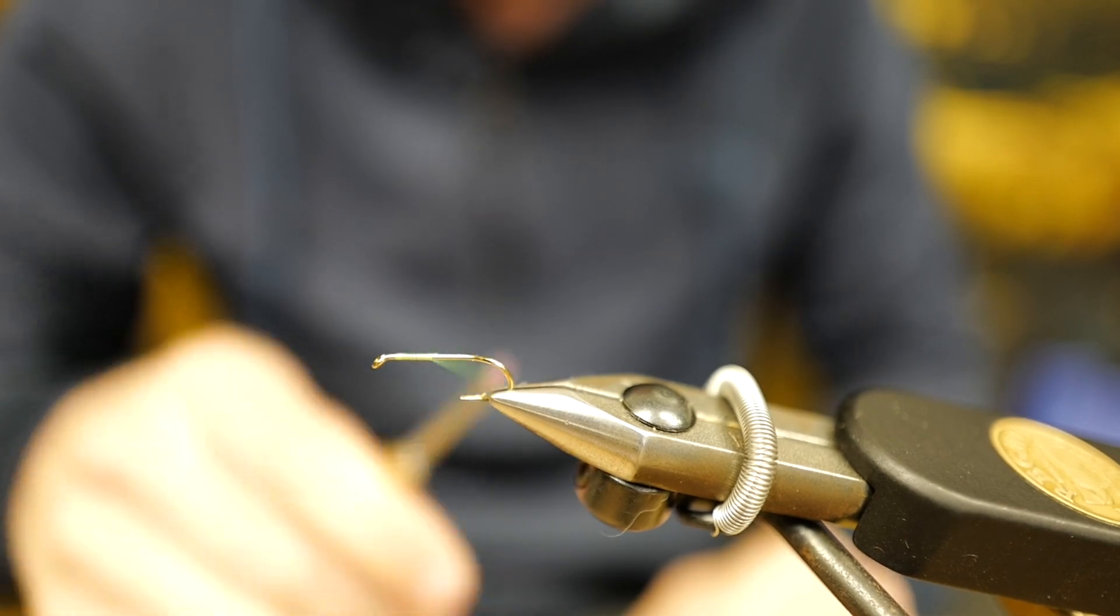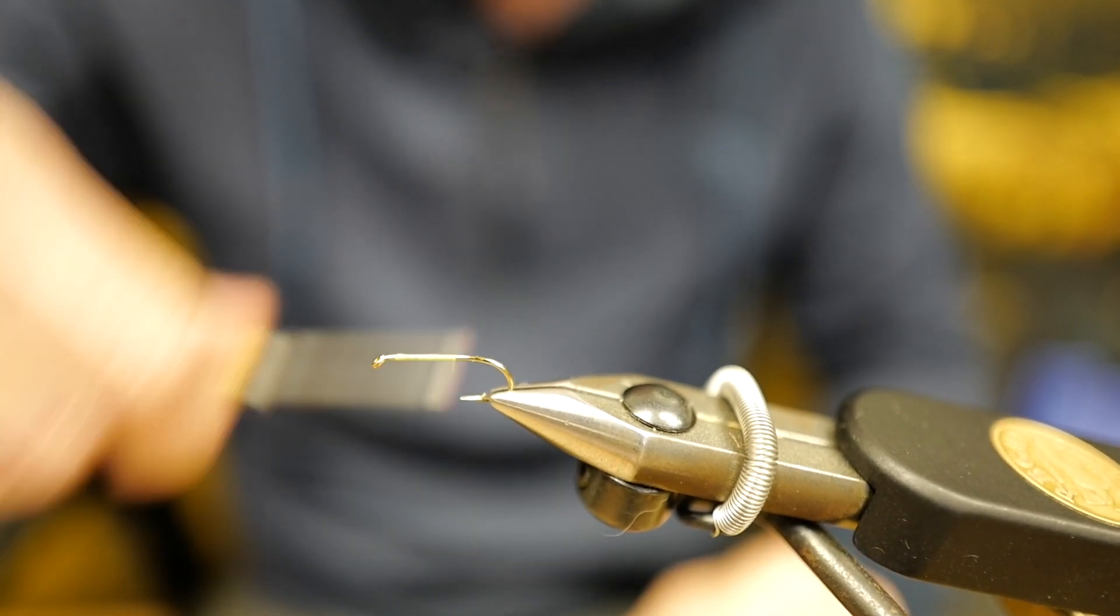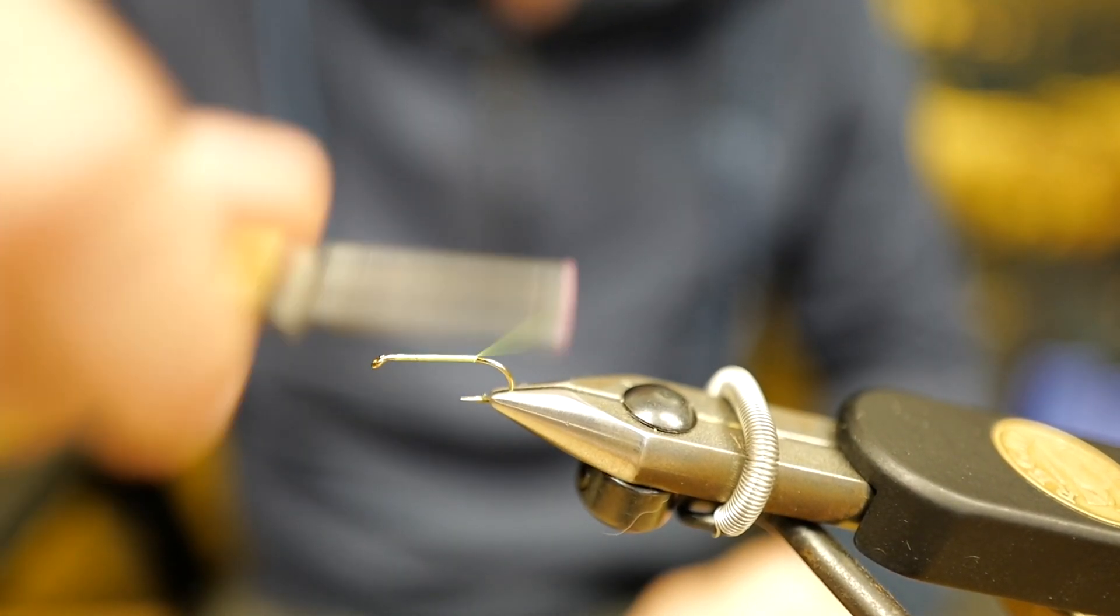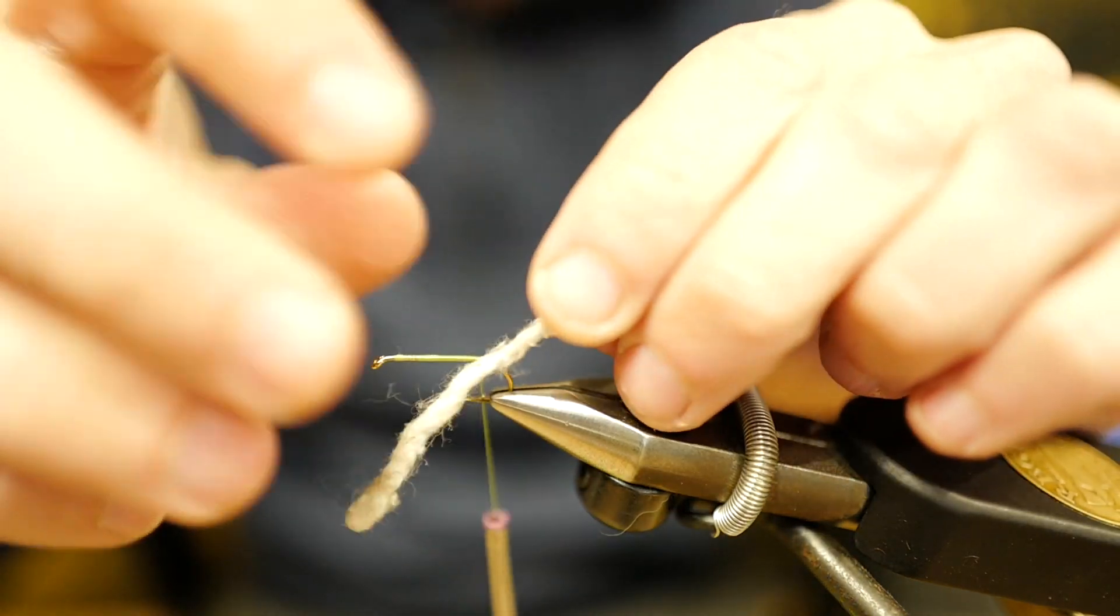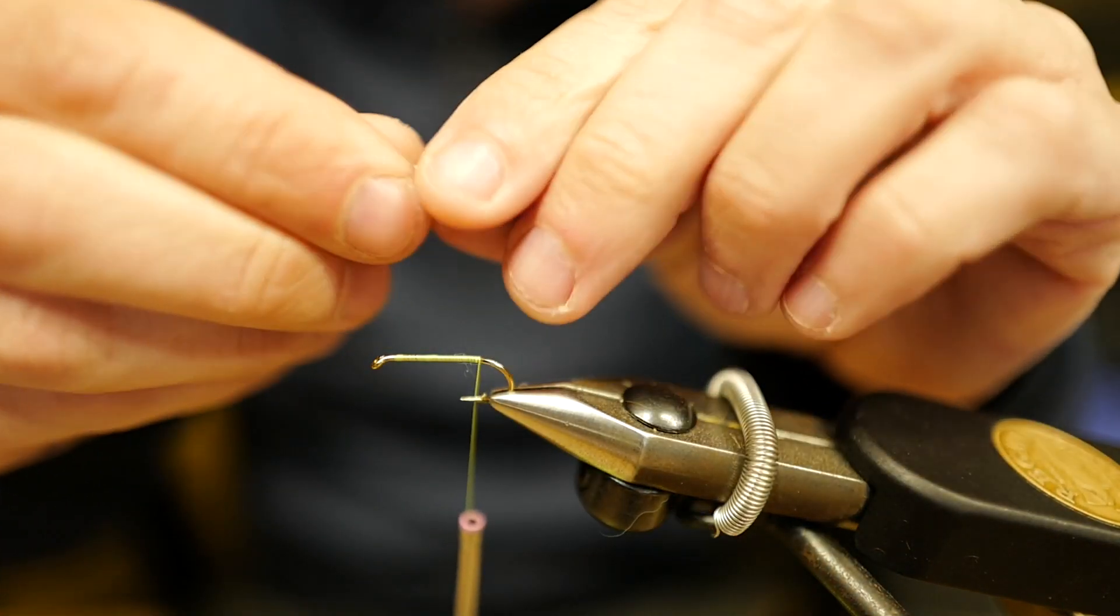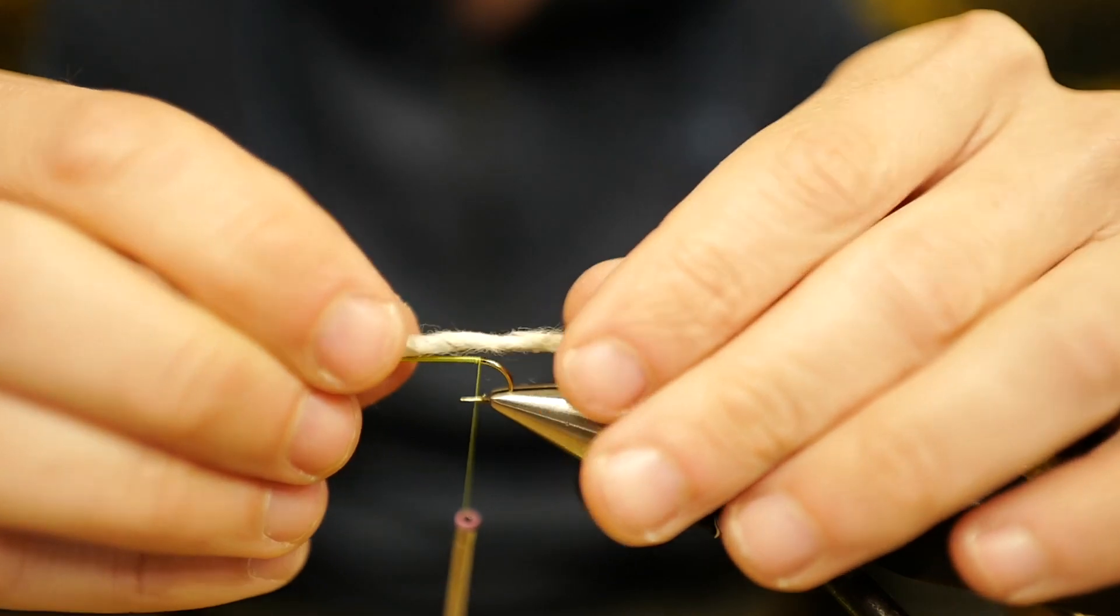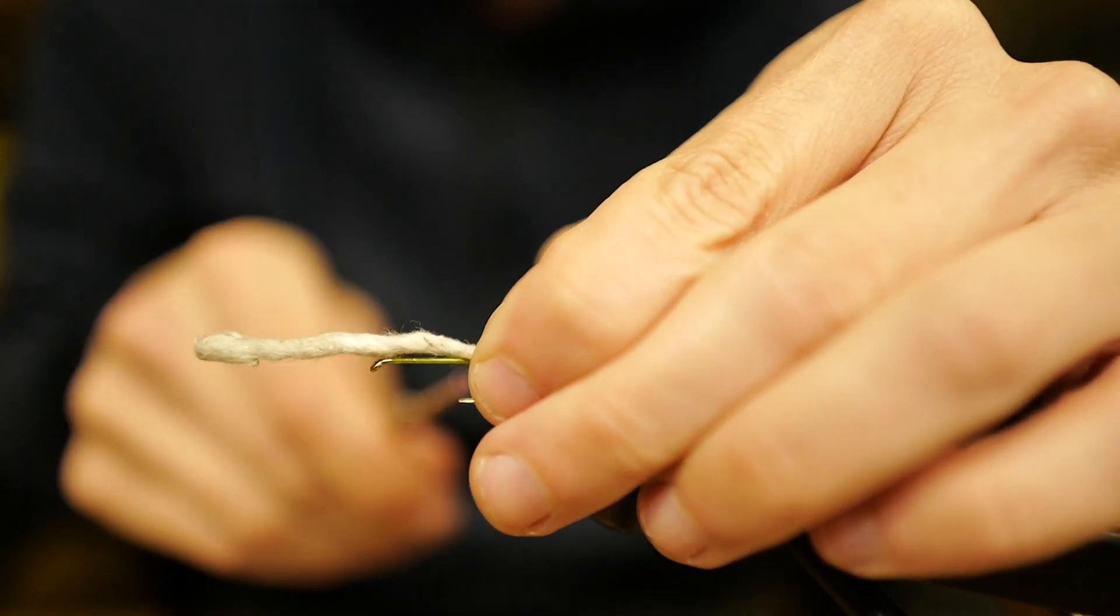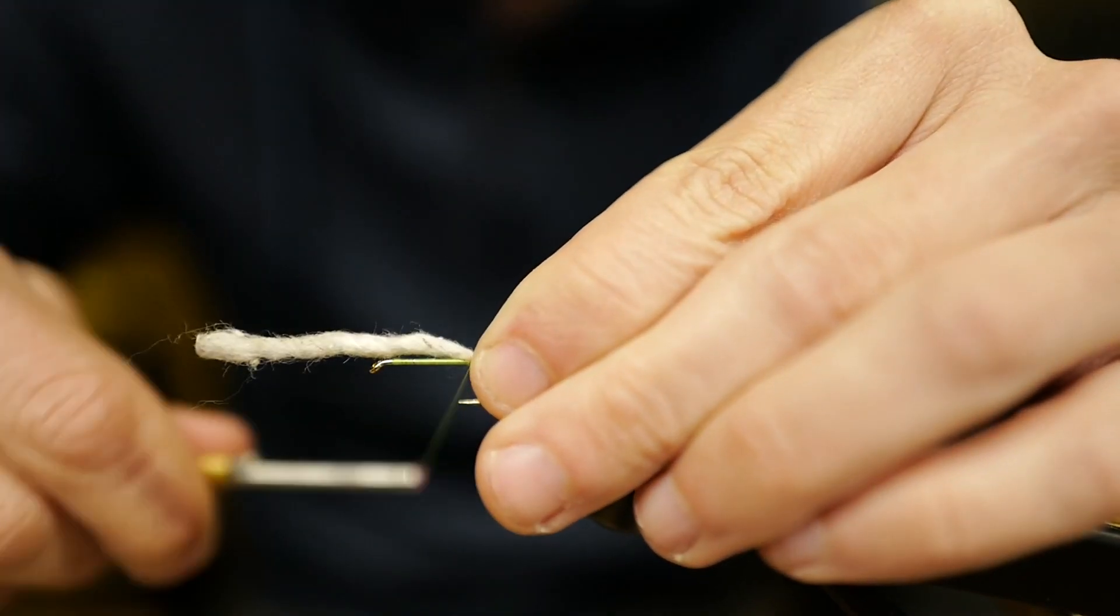I have our hook here and I've started my thread. Now we're going to just cover the hook with some of this thread—this is a bright yellow. Now I'm going to get my mop material, which is this white material here. I'm going to start it in the back here and I'm going to tie that in.